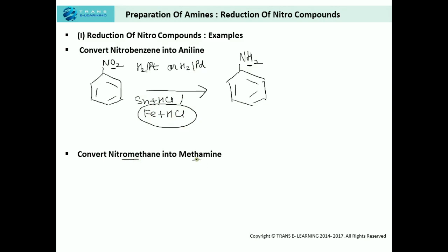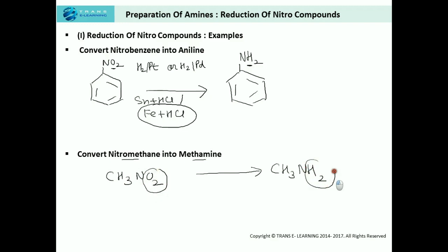Second example: converting nitromethane into methylamine. Nitromethane is CH₃NO₂ and methylamine is CH₃NH₂. Again, the alkyl group remains intact and only the oxygen atoms are replaced by hydrogen atoms — reduction of the nitro compound. We can do this using H₂/Pt in ethanol, or Sn + HCl, or Fe + HCl. This is how we convert aliphatic and aromatic nitro compounds into aliphatic and aromatic amines.